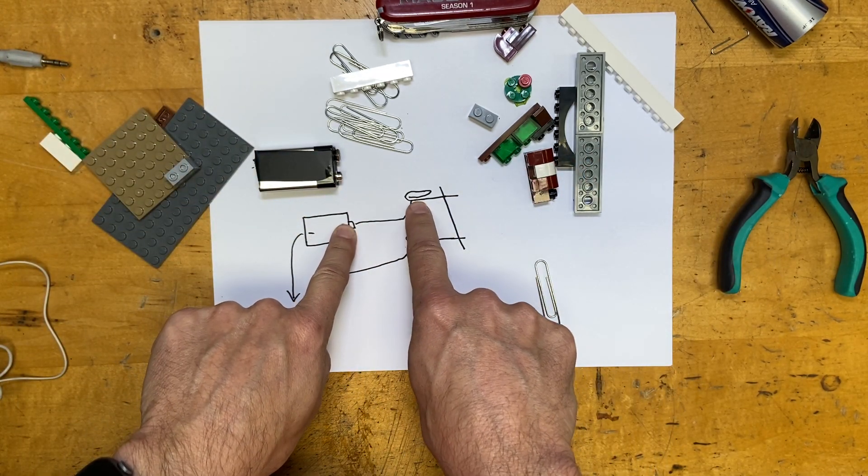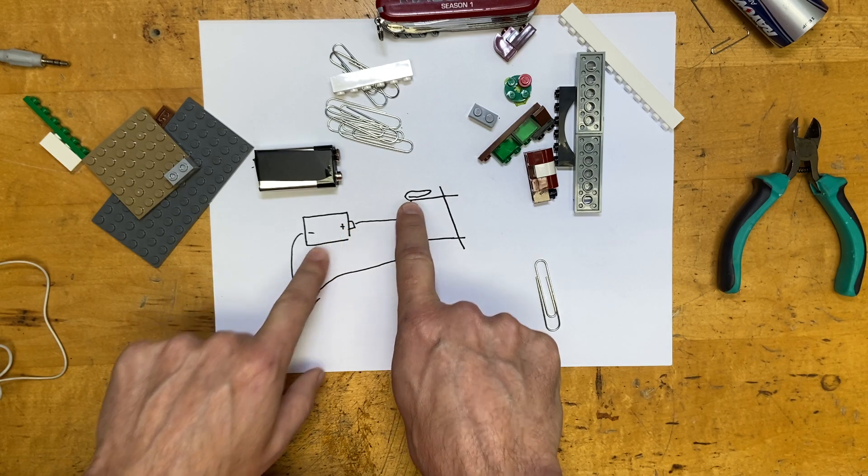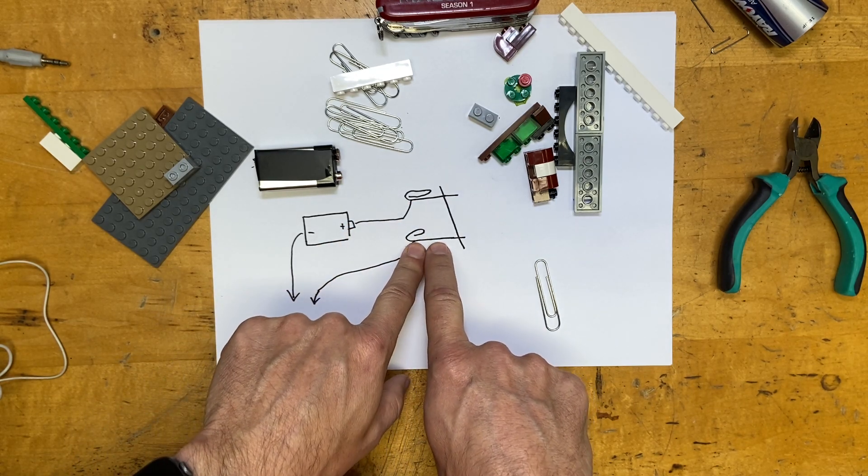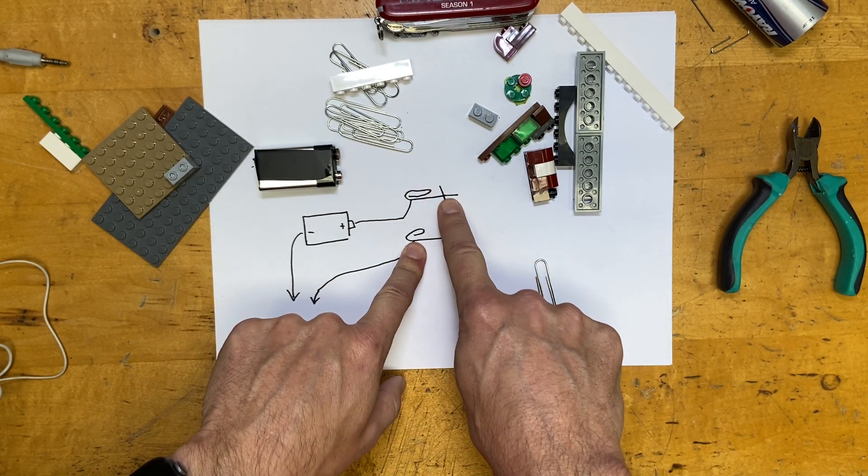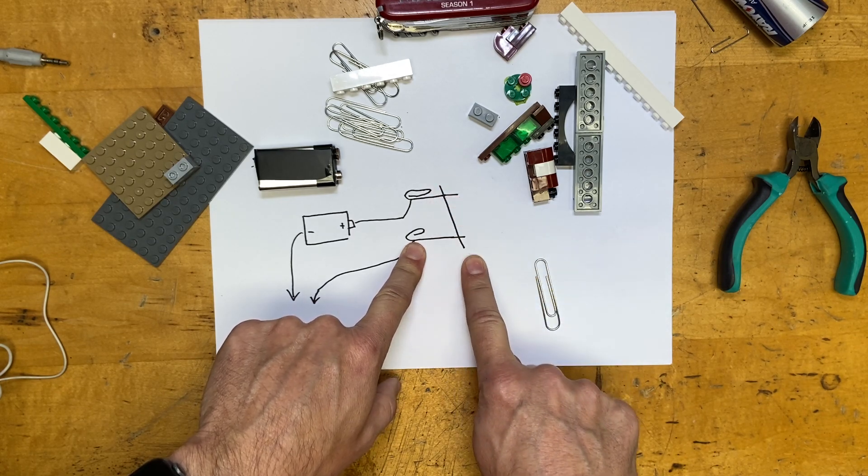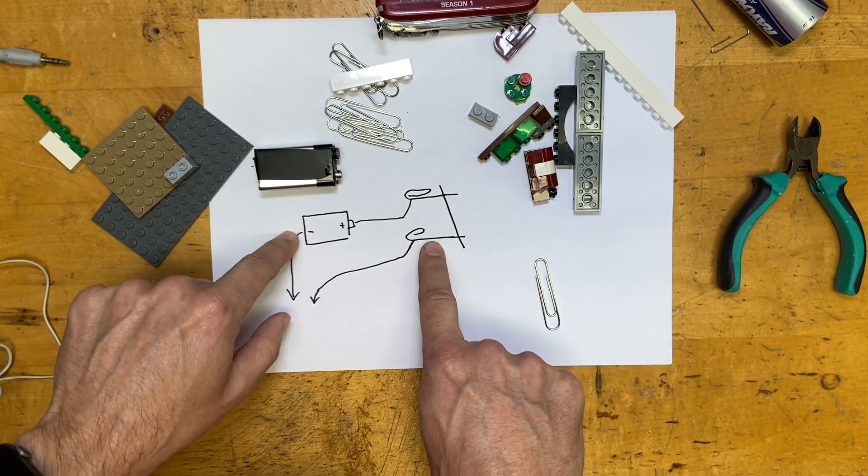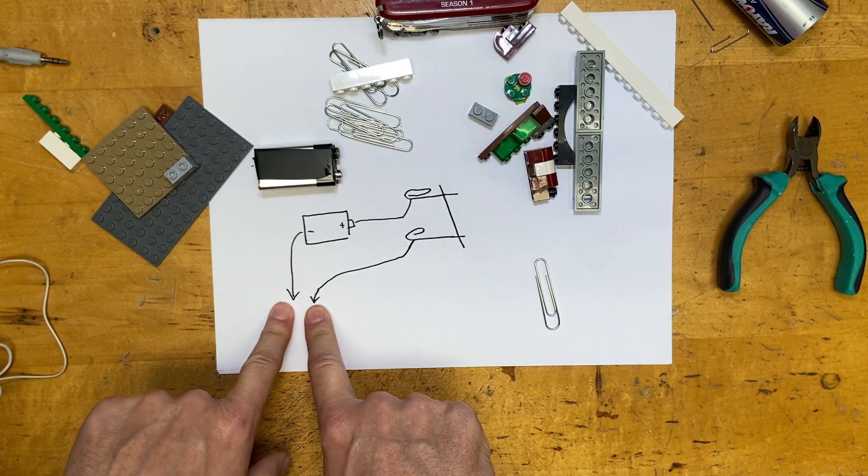Then out of the positive terminal, I'm going to connect it to a paperclip. Then I'm going to have another paperclip. Then a piece of a paperclip is going to be laying on top of those horizontally this way. Then these two wires will go to my earphones.